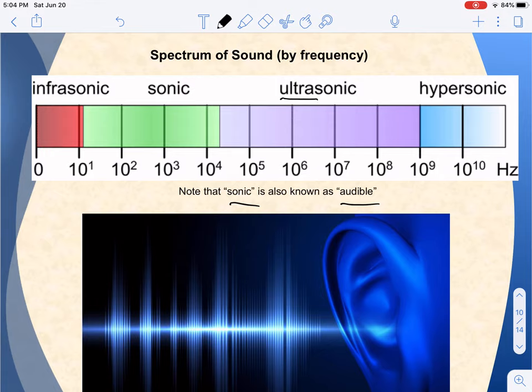These prefixes, by the way, are also used with light. Think about the visible spectrum of light, your ROY G BIV. Well, R stands for red. What is lower frequency than red? Infrared. The V stands for violet. What is higher frequency than violet? Ultraviolet. So these are the same prefixes that we use for both light and sound.